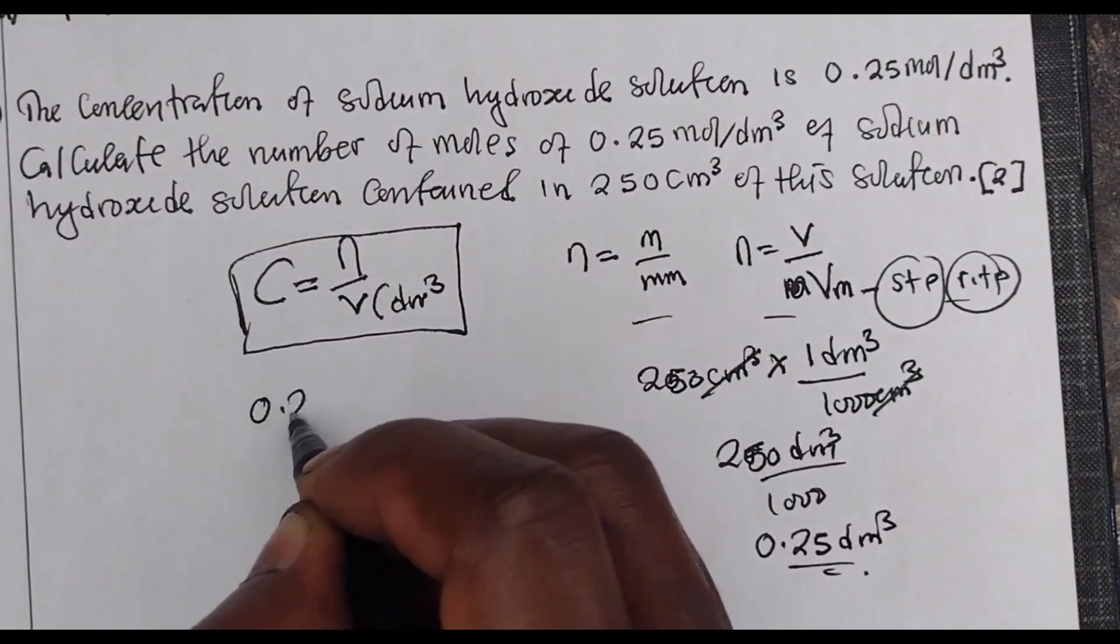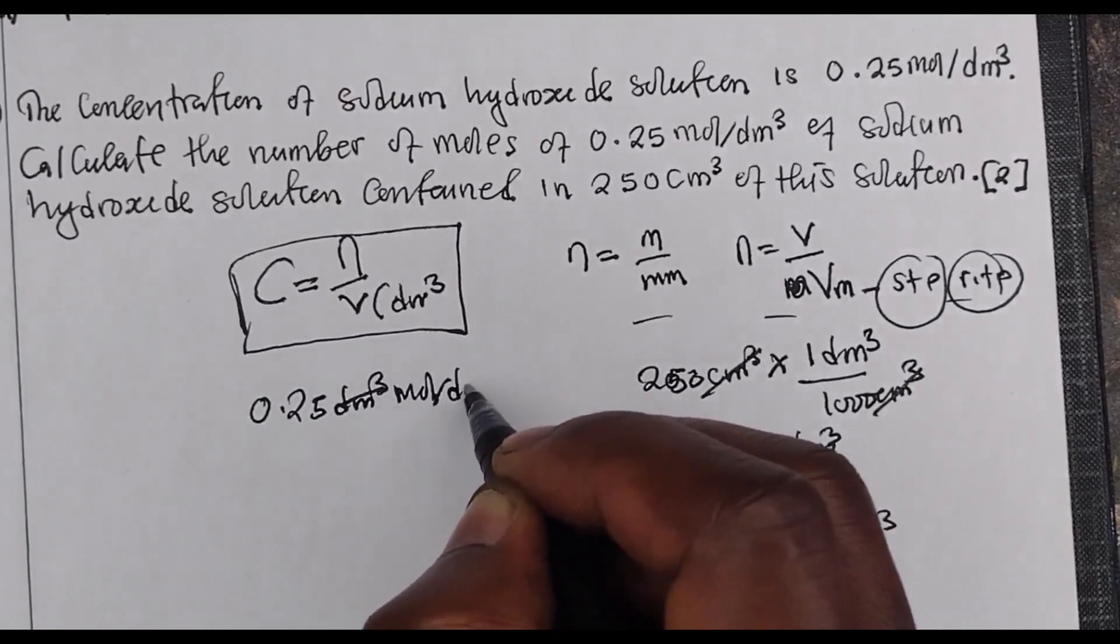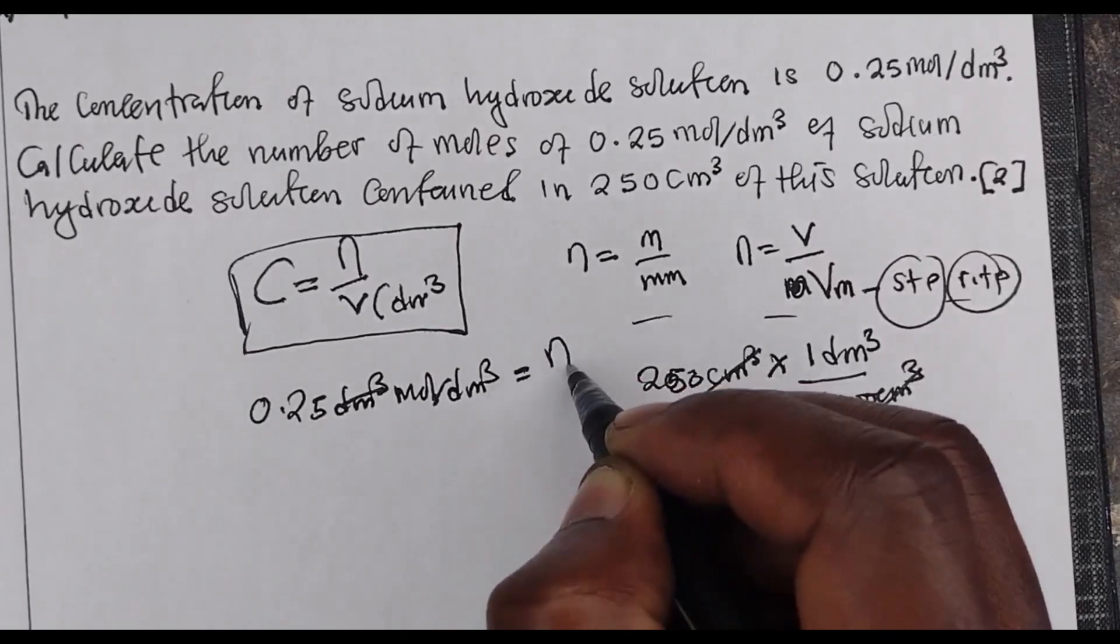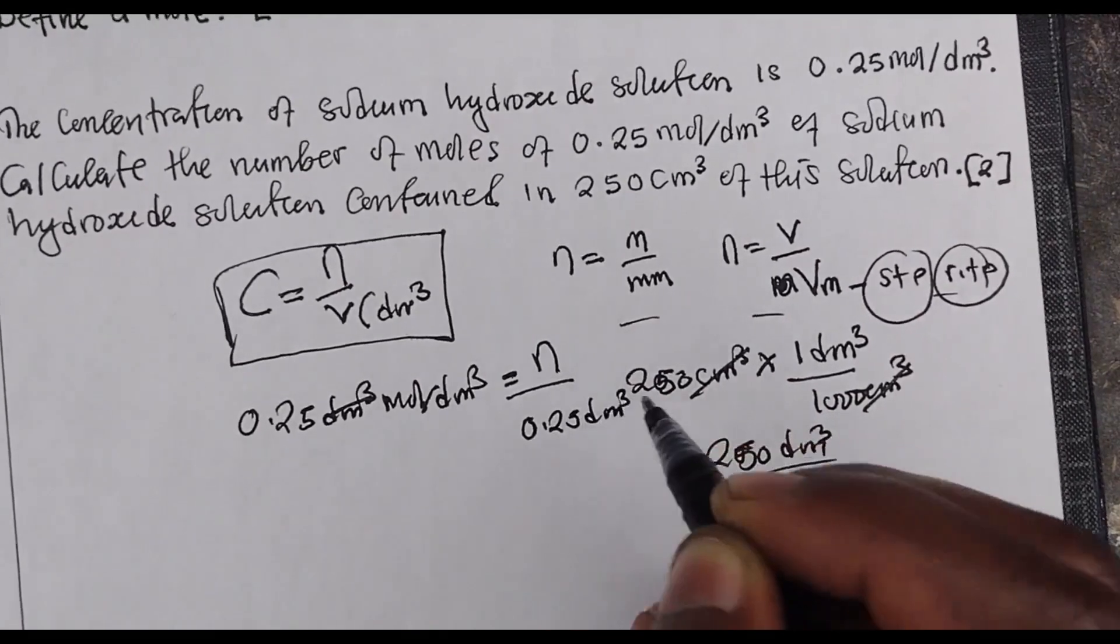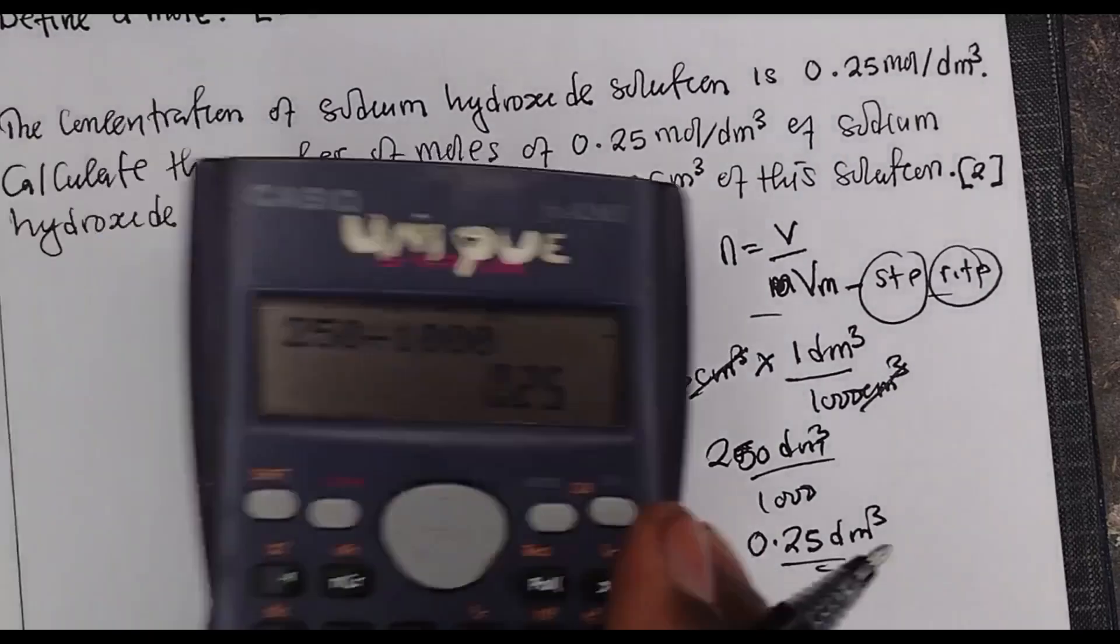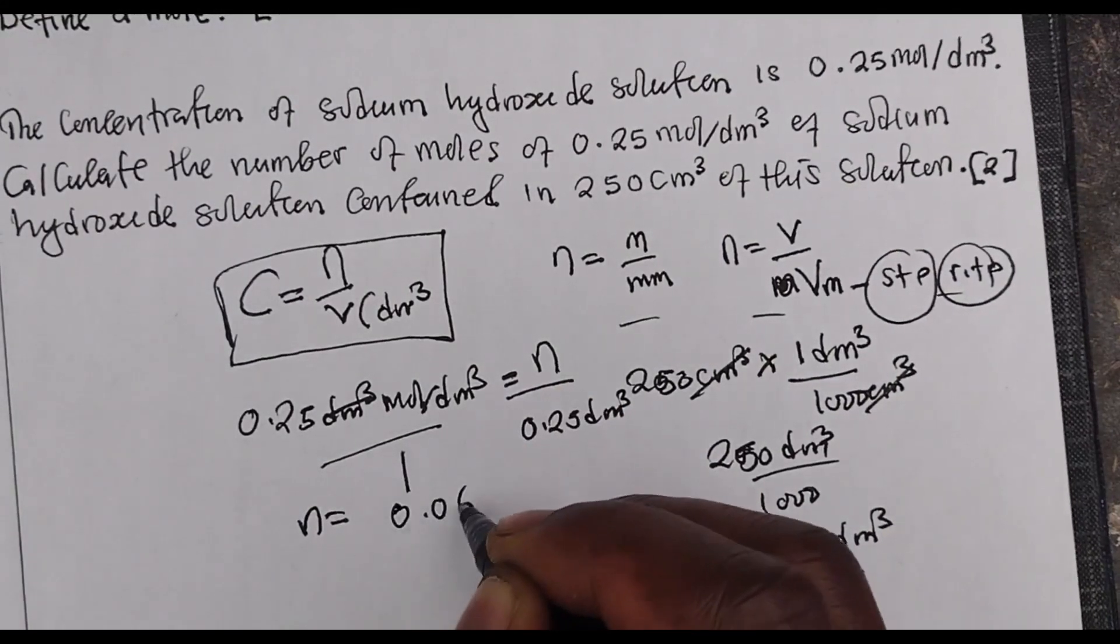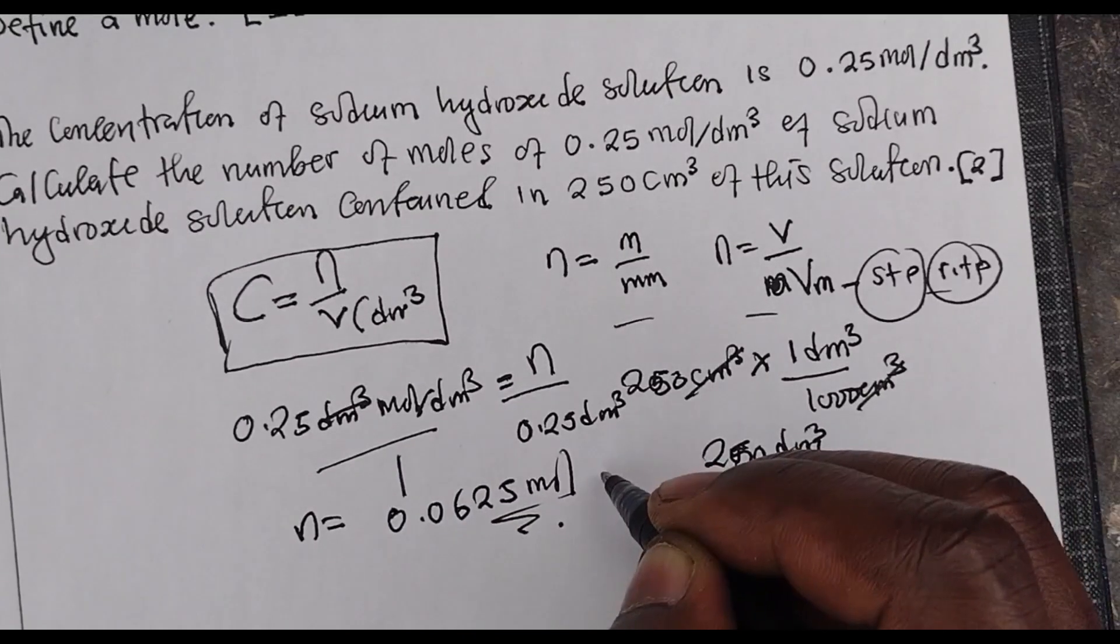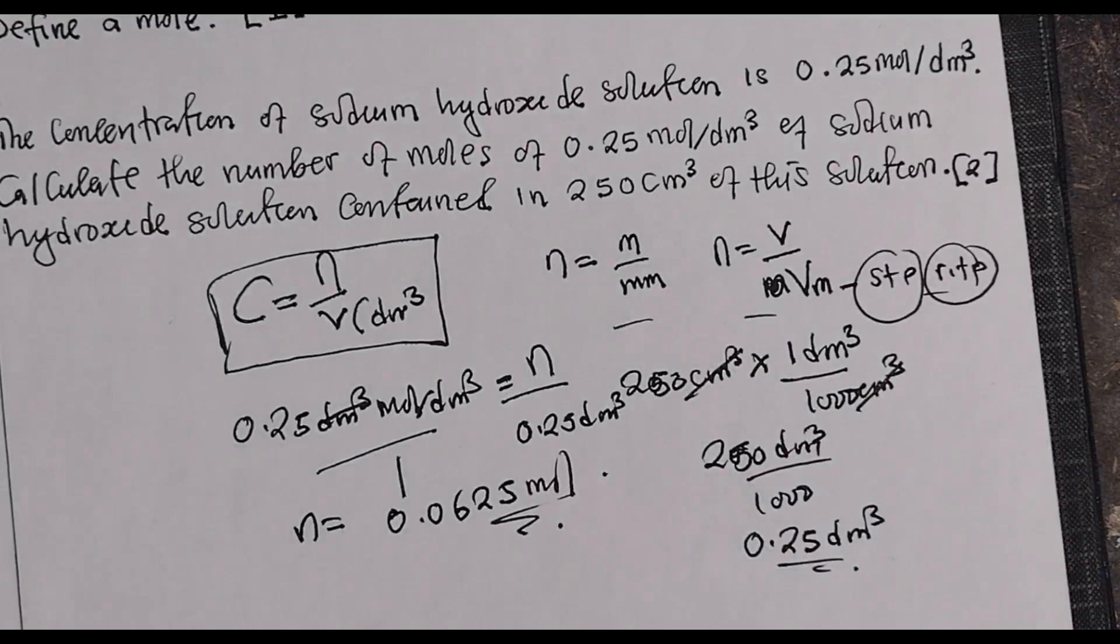We go back to the formula. Concentration is 0.25 mol/dm³ equals number of moles that we want to find divided by volume 0.25 dm³. Making n the subject of formula, concentration and volume will multiply. In this case, you have 0.25 multiplied by 0.25, which gives us 0.0625 moles. This is the number of moles of sodium hydroxide contained in 250 cm³ of the solution.